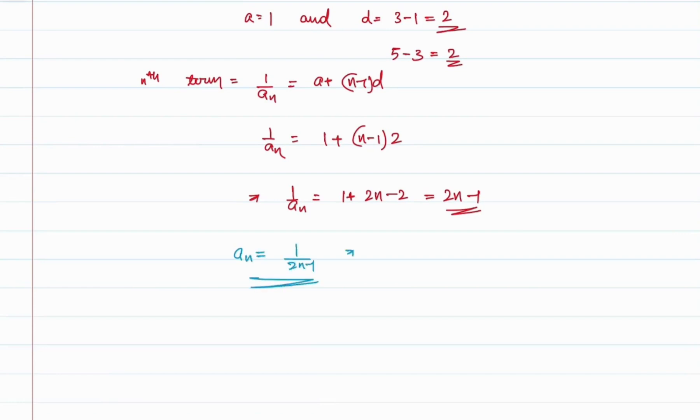So an = 1/(2n−1). This will be the nth term or the general term of the given harmonic progression.